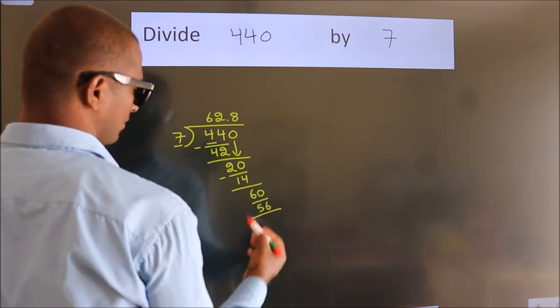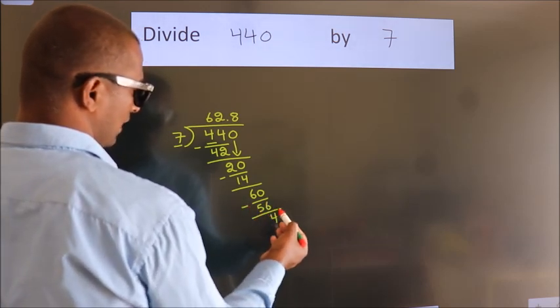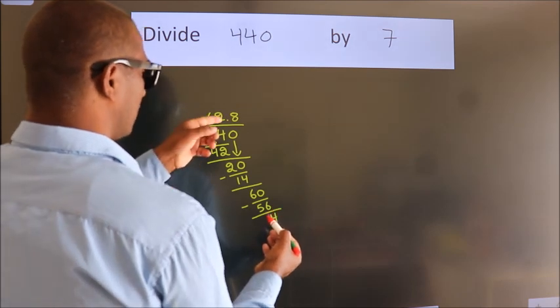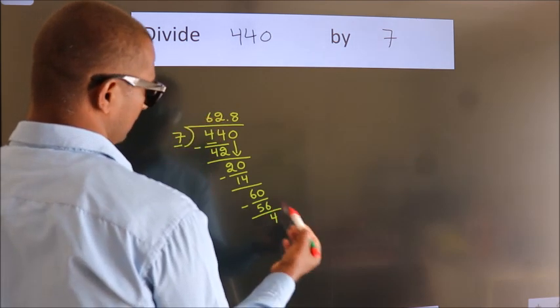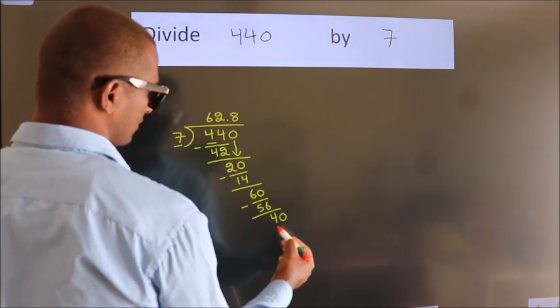Now we subtract. We get 4. After this, we already have the decimal, so directly take 0, giving us 40.